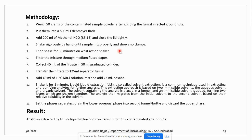We shake the flask vigorously by hand until the sample mixes properly with no clumps, then keep it on a rotary shaker for thorough mixing. Then we filter the mixture through medium fluted paper and collect 40 ml of the filtrate, which is transferred to a separatory funnel. This is a liquid-liquid extraction technique, also called solvent extraction — a common technique used in the extraction and purification of analytes for further analysis.